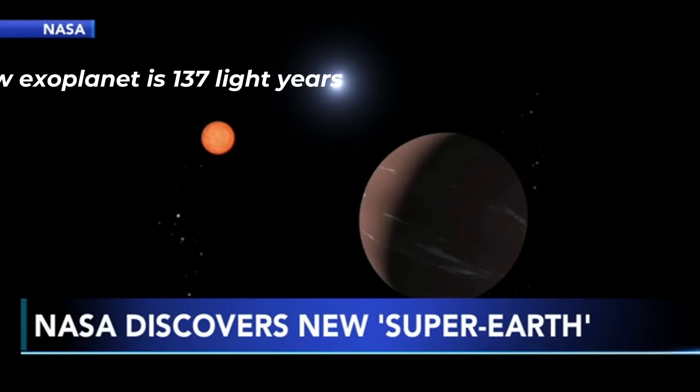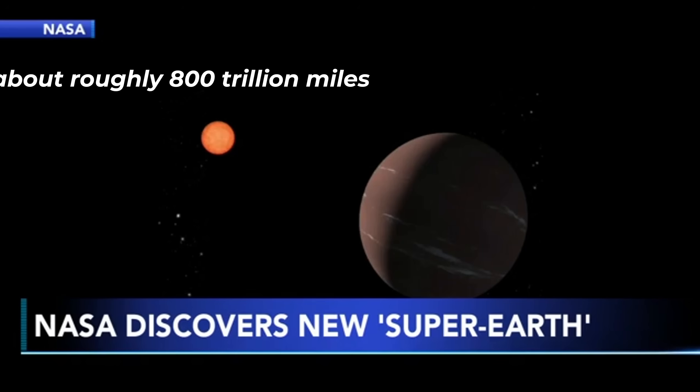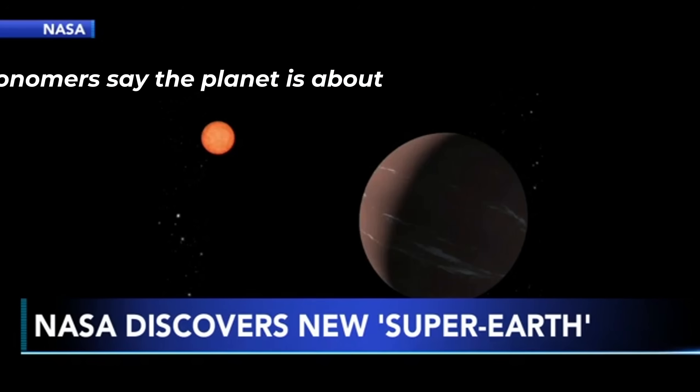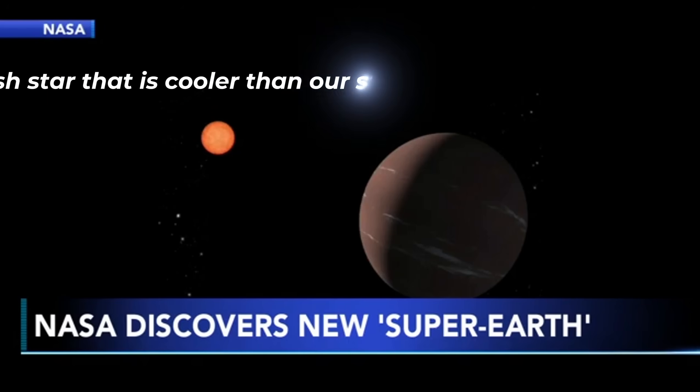The new exoplanet is 137 light years away, or roughly 800 trillion miles. Astronomers say the planet is about one and a half times the size of Earth and orbits a small reddish star that is cooler than our sun.